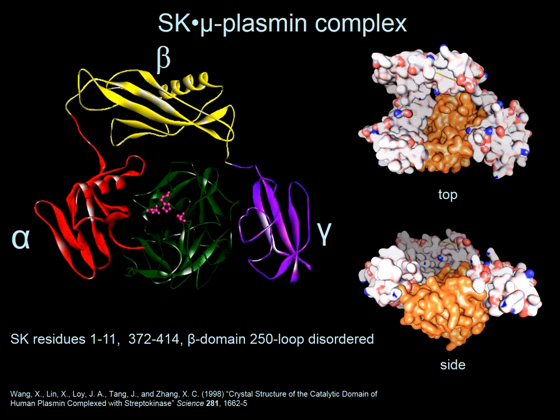When SK binds to plasmin — whether microplasmin or plasminogen — it forms a three-sided crater surrounding the catalytic site, as shown here in the top and side views. The catalytic domain of plasminogen sits at the base of the crater, and what this forms is a surface for binding another plasminogen molecule as a substrate.